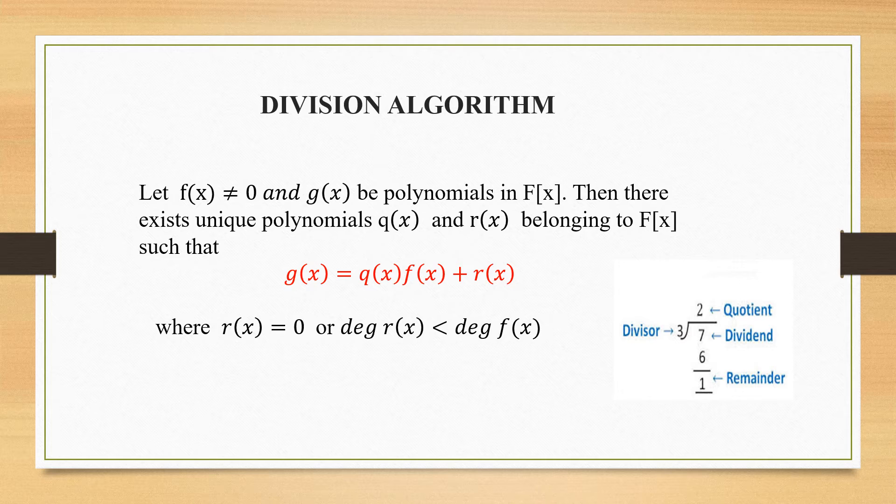Where r(x) equals 0, what is r(x)? The remainder. The remainder can be 0 or the degree of the remainder is less than the degree of f(x). This condition is very important. This will be extended till your GCD of polynomials.